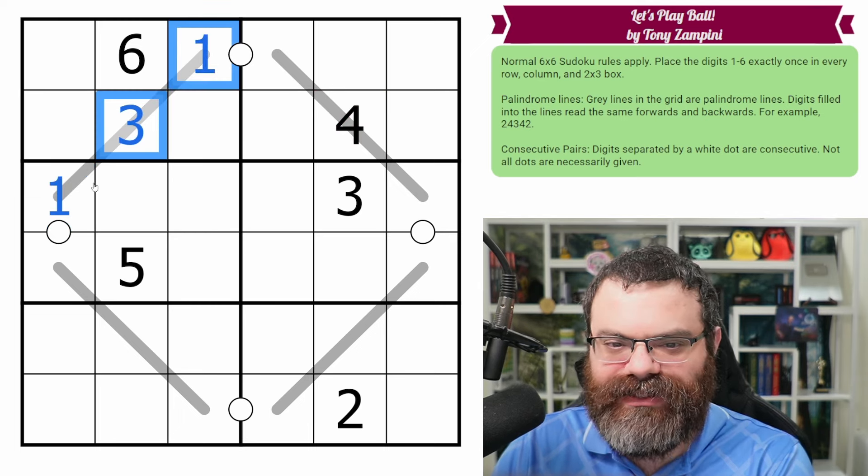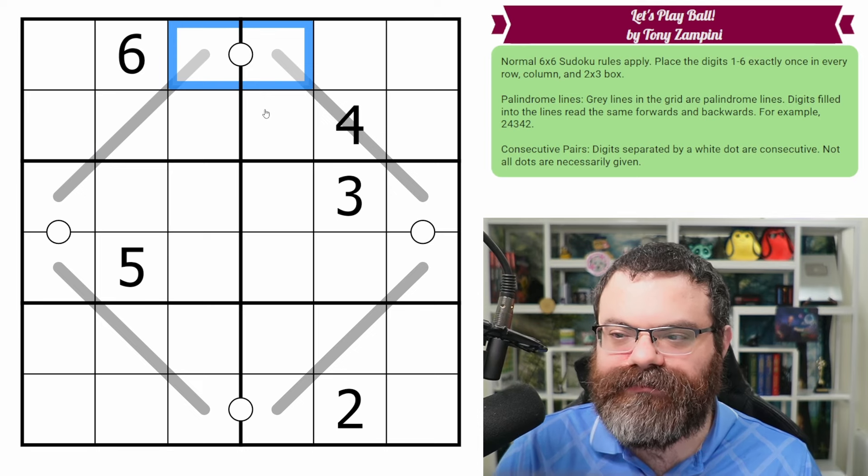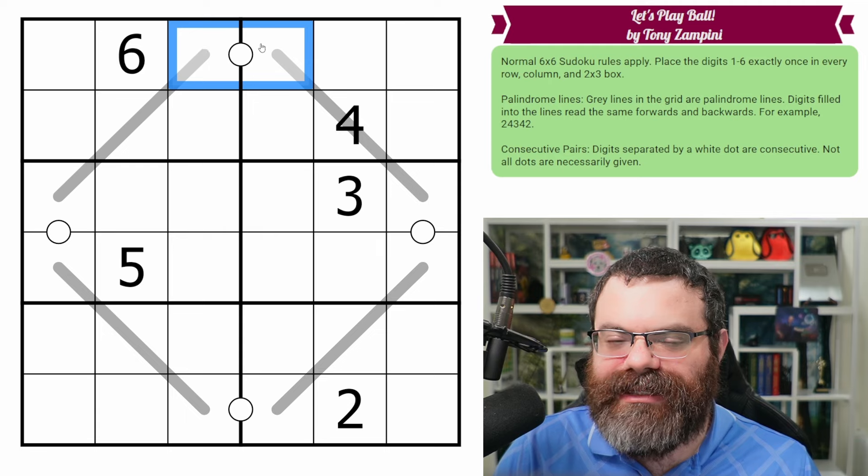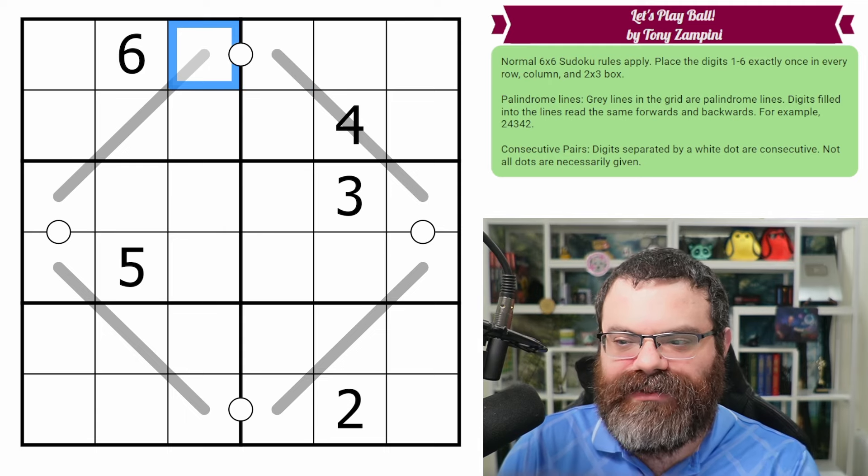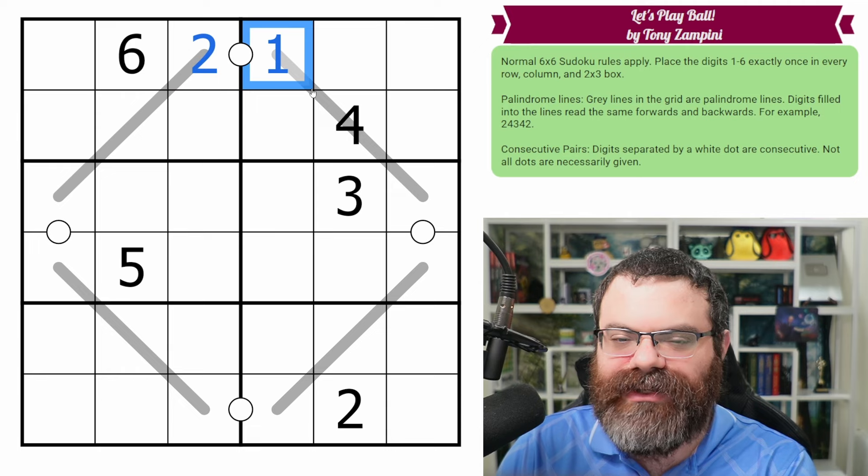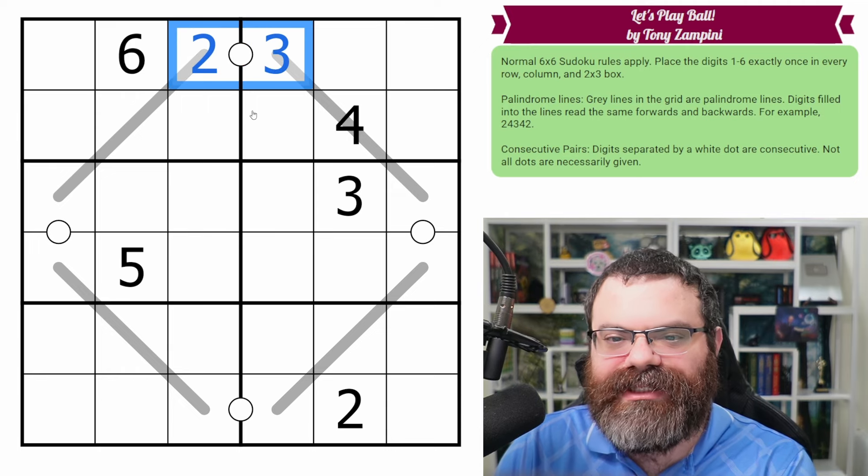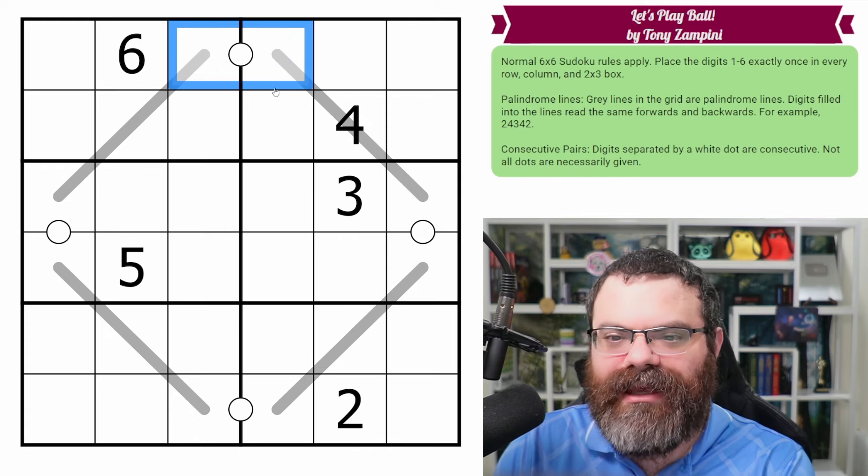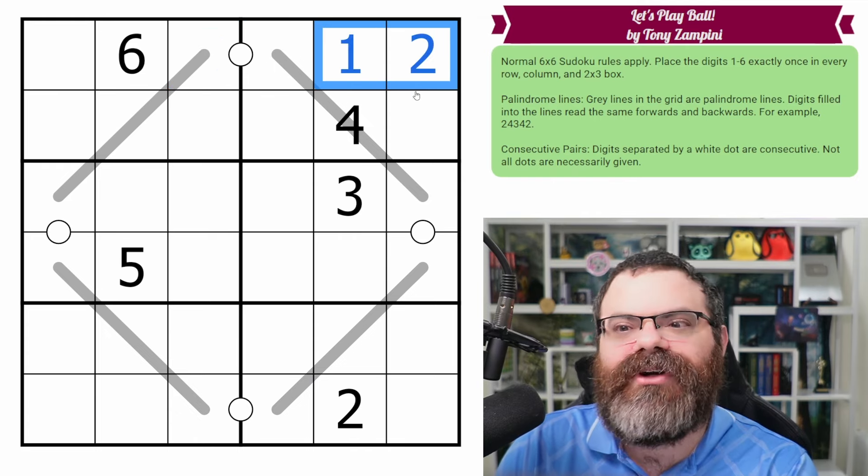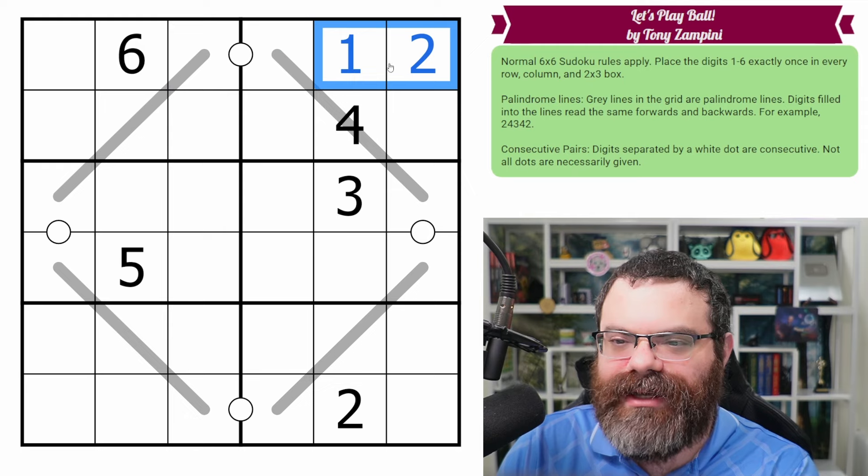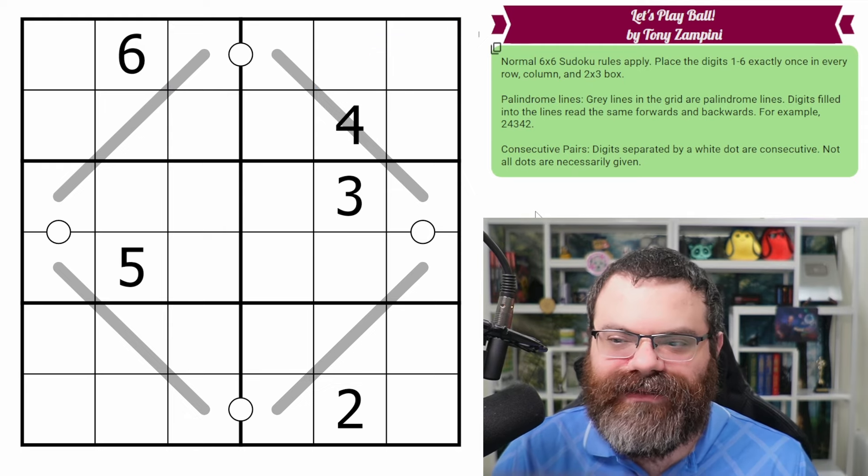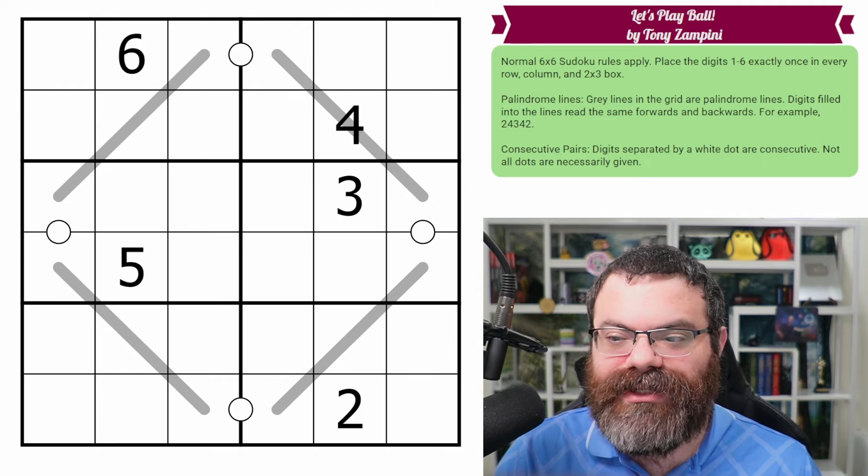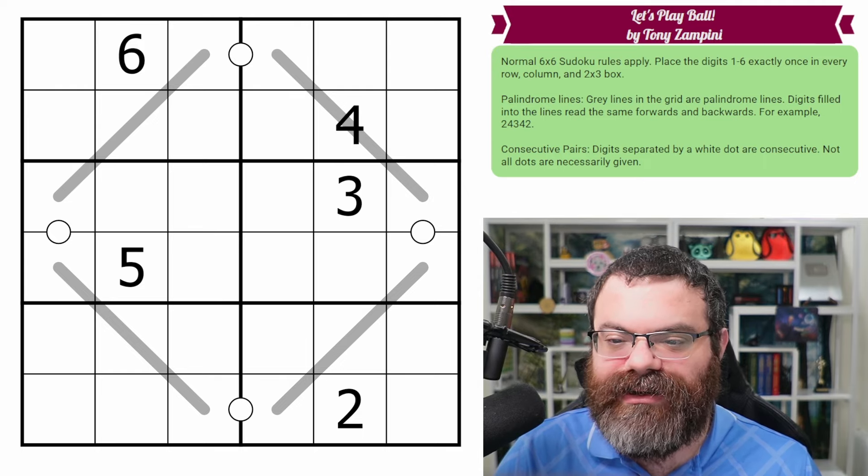And then in addition to that, we have these white dots in the grid. These are consecutive pair dots. Digits that are separated by a white dot must be consecutive. So if this was a two, this could be a one because one's consecutive to two, or it could be a three because three is consecutive to two. We can't do two, five because those are not consecutive. Now I can also put consecutive digits elsewhere - we're not prevented from that, even though there's no white dot. Not all the dots are necessarily given. All right, those are the rules. There's a link in the description if you'd like to try the puzzle yourself, and I'm going to get started right now.